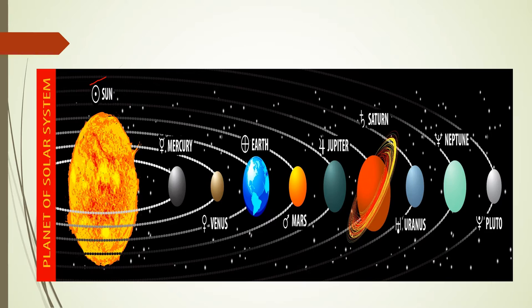Pluto is considered as the dwarf planet. The solar system also includes satellites of planets, numerous comets, asteroids and meteoroids. So there are total eight planets and one dwarf planet that is Pluto. Please do remember the names of the planets in the order which I have given.